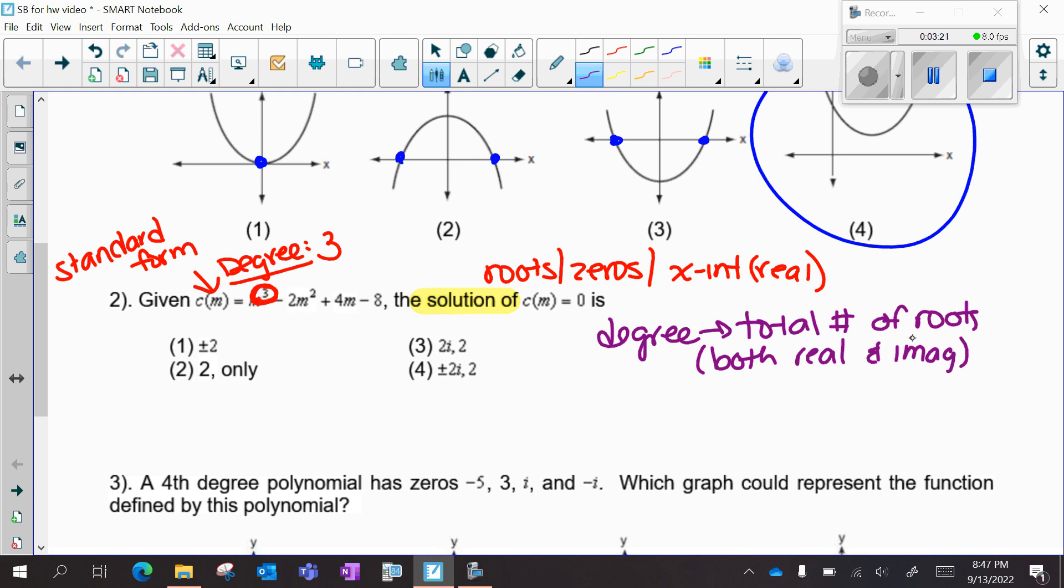So if I'm looking at my answer choices, I know that I have to have three answers. Choice one, this is x equals 2, x equals negative 2. The plus and minus means that only has two answers. Choice two, only x equals 2. Choice three, x equals 2i, x equals 2. It has to be choice four. This is x equals 2i, negative 2i, and 2. So I have three total answers. That's how I know my answer is choice four.